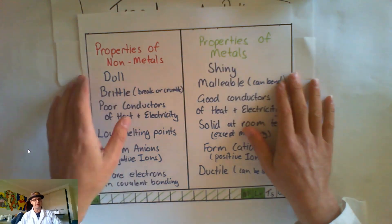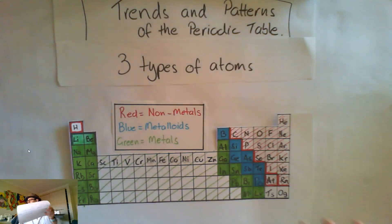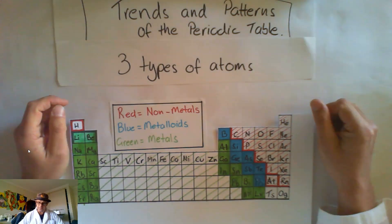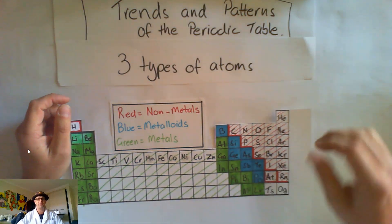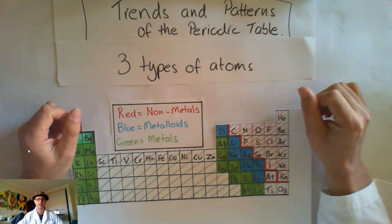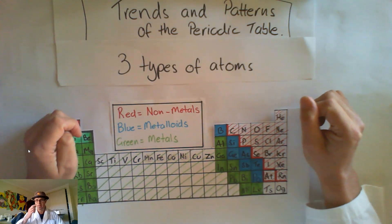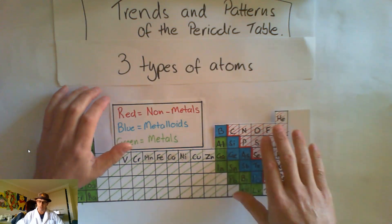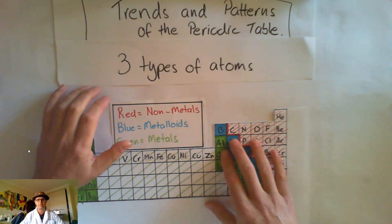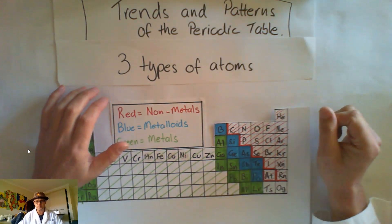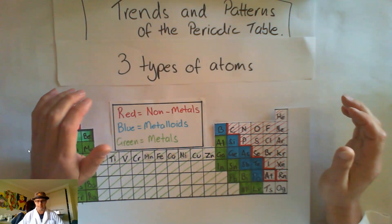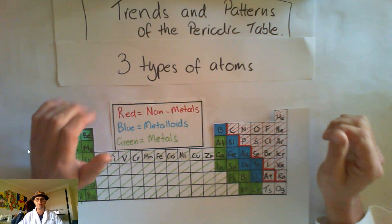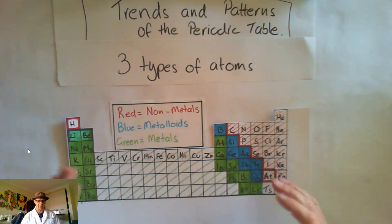But what about our metalloids? Our metalloids are a special breed. This little staircase here shares properties of both metals and non-metals. If I look at silicon, it's not malleable — it can break and doesn't bend very well — but silicon is a great conductor of electricity. So it shares some properties of non-metals and some of metals. These metalloids are really, really handy because they do share those different types of characteristics.